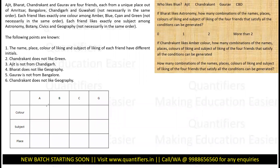Now let's read what the information is — I will keep tabulating it. Chandrakant does not like green, so he is liking either A or B. Ajit is not from Chandigarh, so he is either from Bangalore or Guwahati. Bharat does not like geography, so he is liking either A or C. Gaurav is not from Bangalore, so he is either A or C. Chandrakant does not like geography.